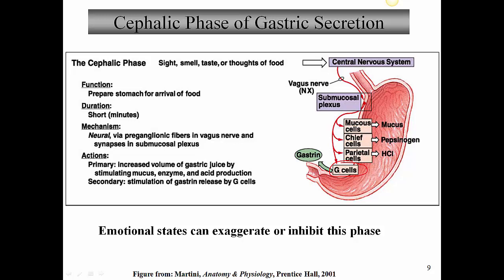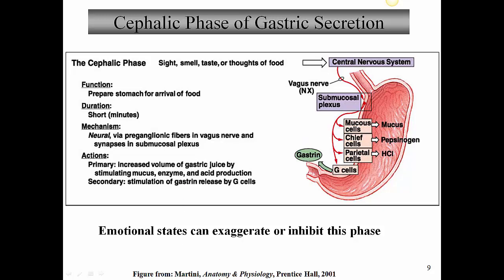Notice the direction of the arrows: mucus cells, chief cells, and parietal cells are all secreting into the mucosa or lumen of the stomach. But the G cells are secreting gastrin in a different direction — into the blood, not into the lumen. Gastrin is a hormone — the go hormone of digestion. It's put into the blood, goes around the body, comes back to the stomach via the circulation, and upregulates production of mucus, pepsinogen, and hydrochloric acid. Emotional states can also exaggerate or inhibit this phase since it's neurally controlled.